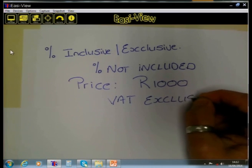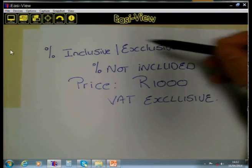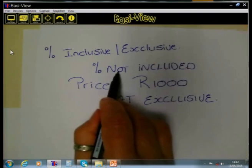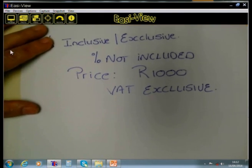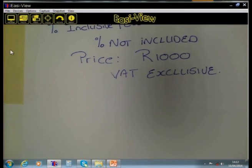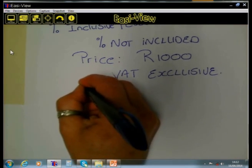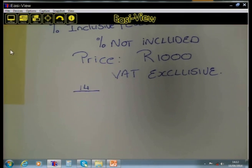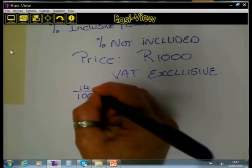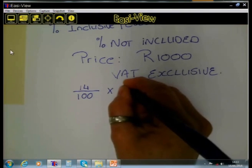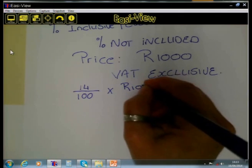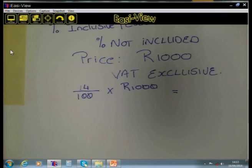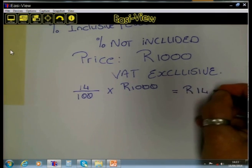In other words, the VAT has not been included yet. What will you do if you need to go and calculate the VAT on that 1000 Rand? It is a simple calculation where we simply say — remember VAT is 14% — 14 over 100 multiply by 1000 Rand, and we see that the VAT payable is 140 Rand.